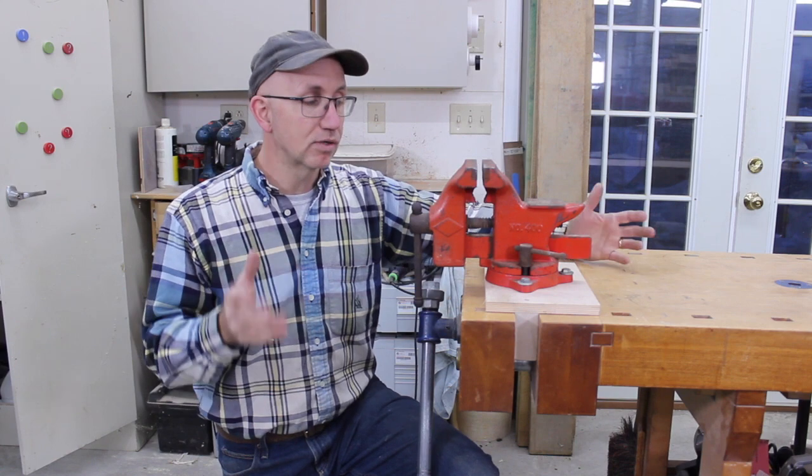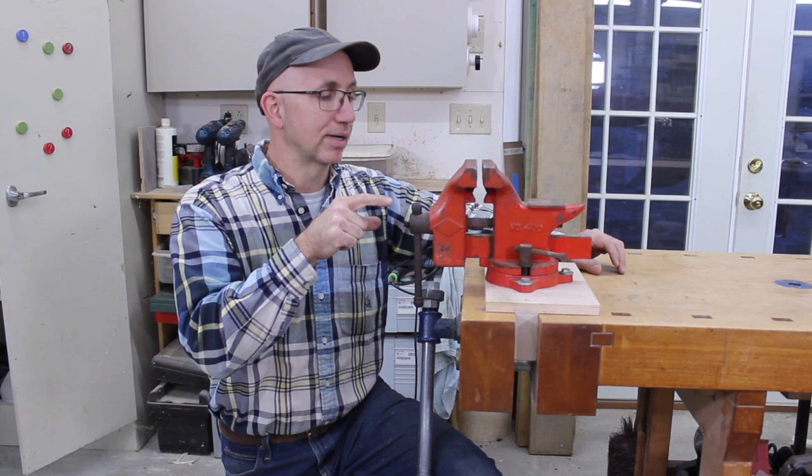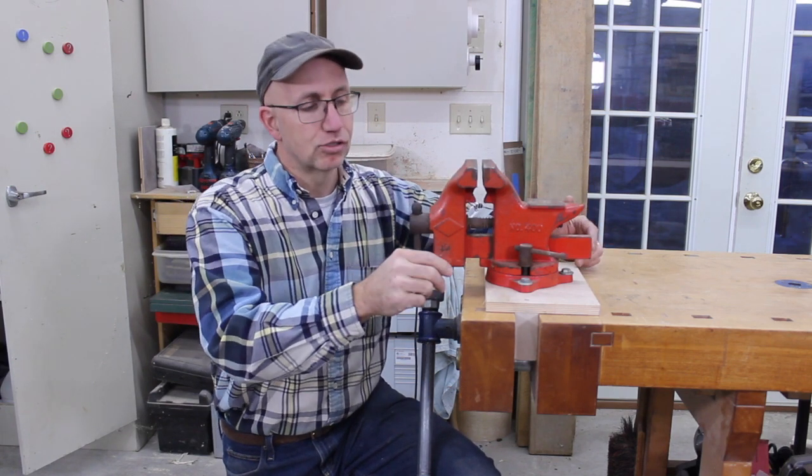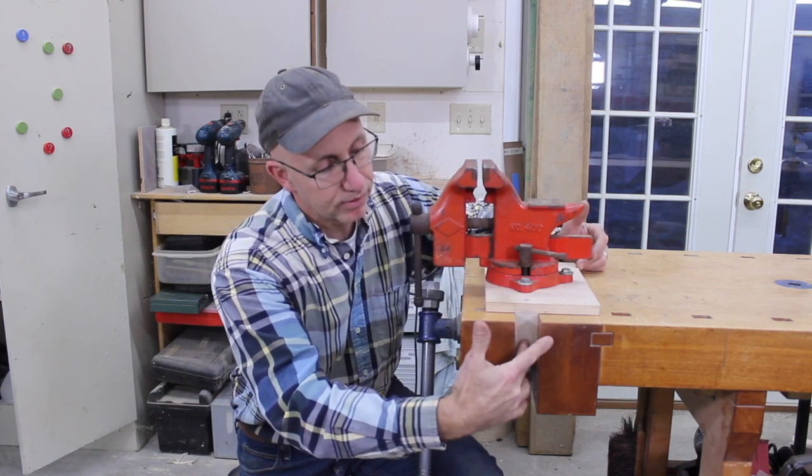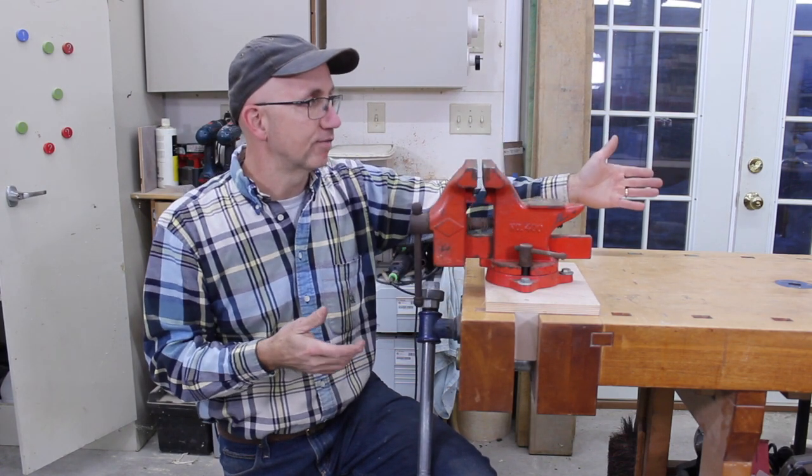And so years ago, a mentor of mine had this set up and so then I made one for myself. What it is, it's a metal vice and it is attached to a piece of plywood, which is also attached to a piece of maple here. And that then sits in my end vice or in my side vice down here.